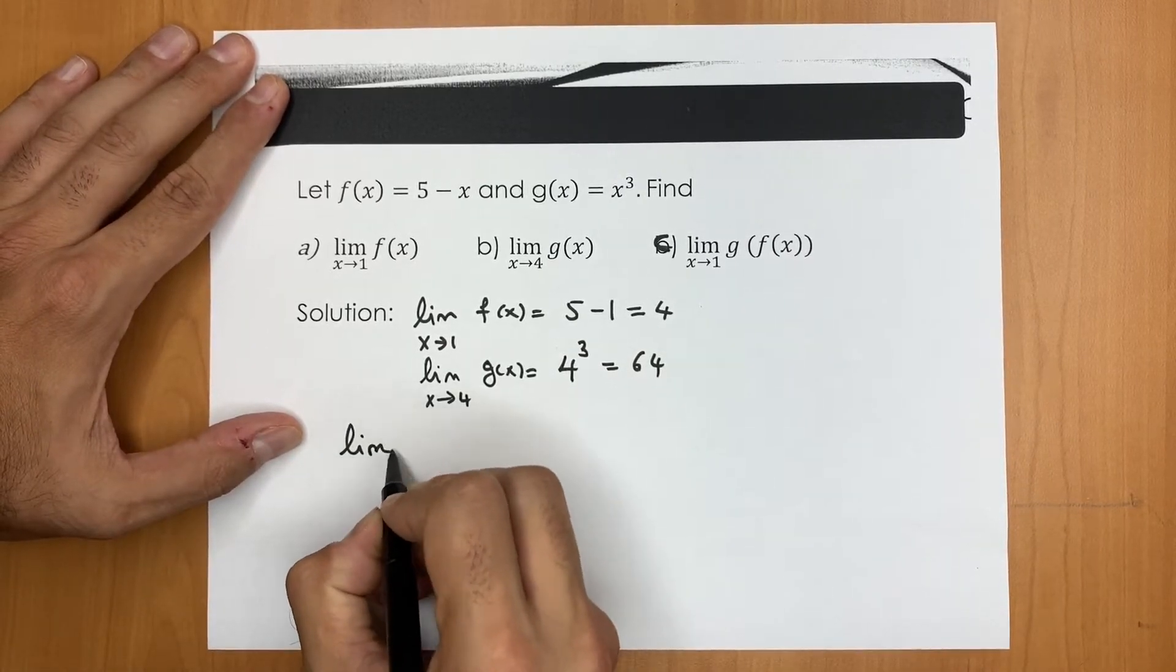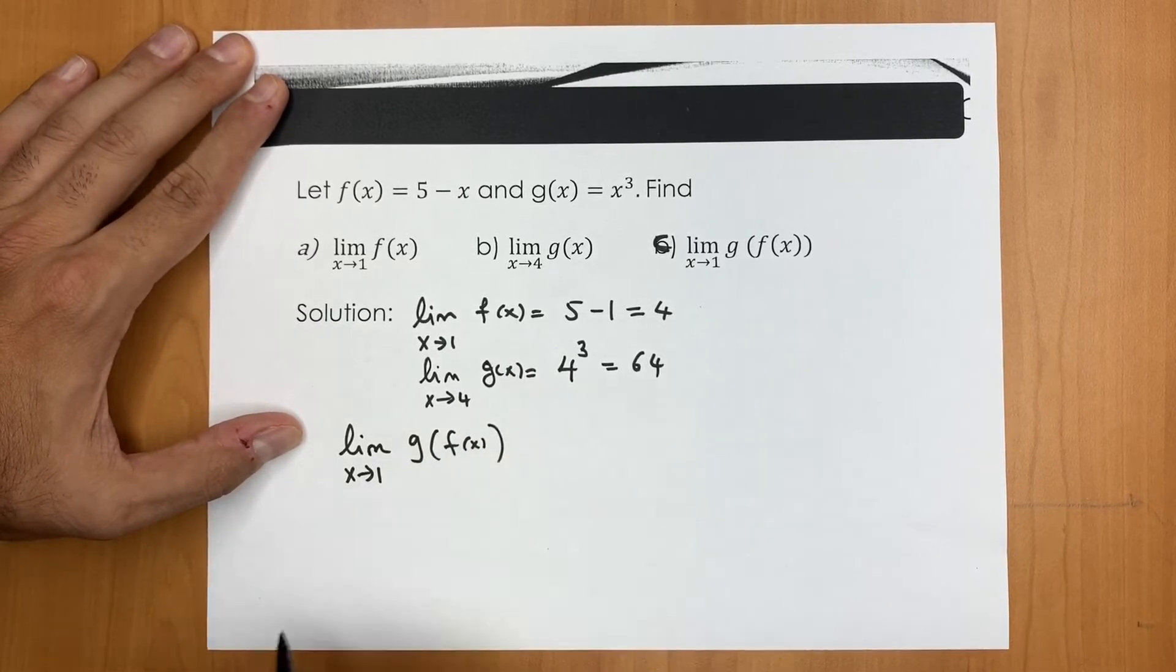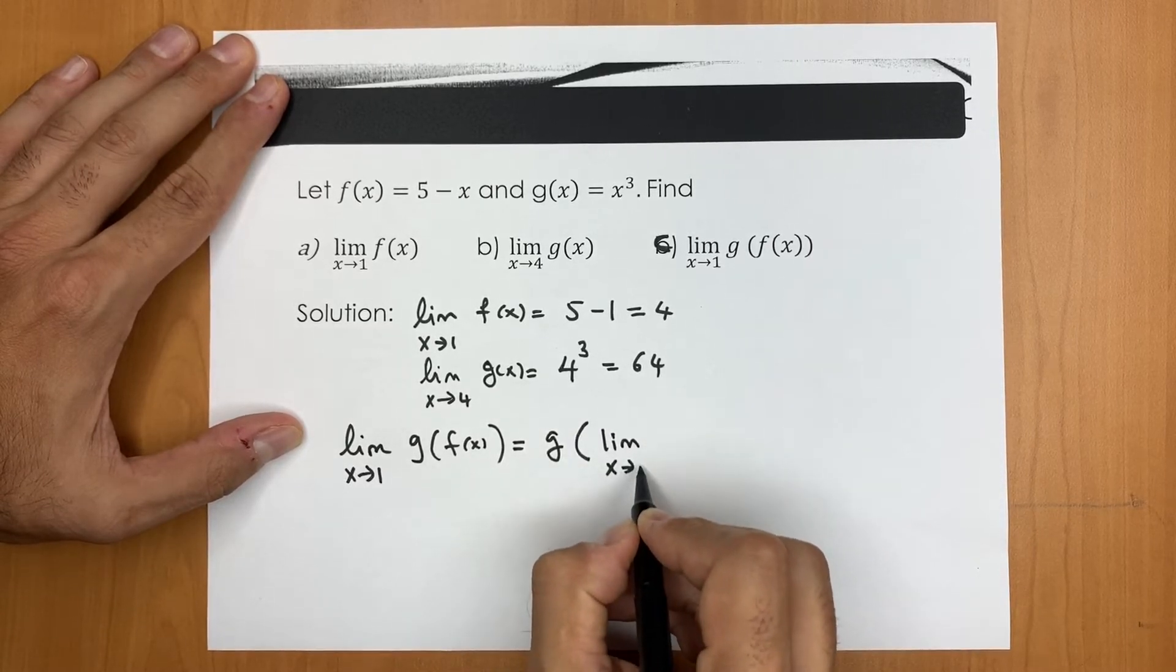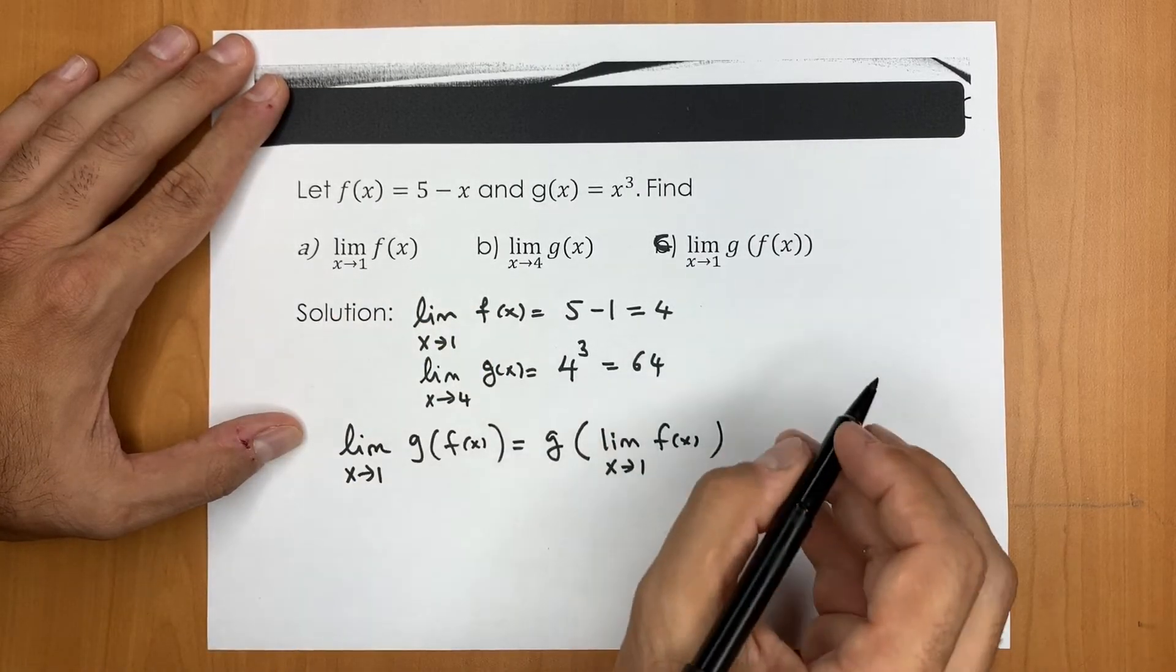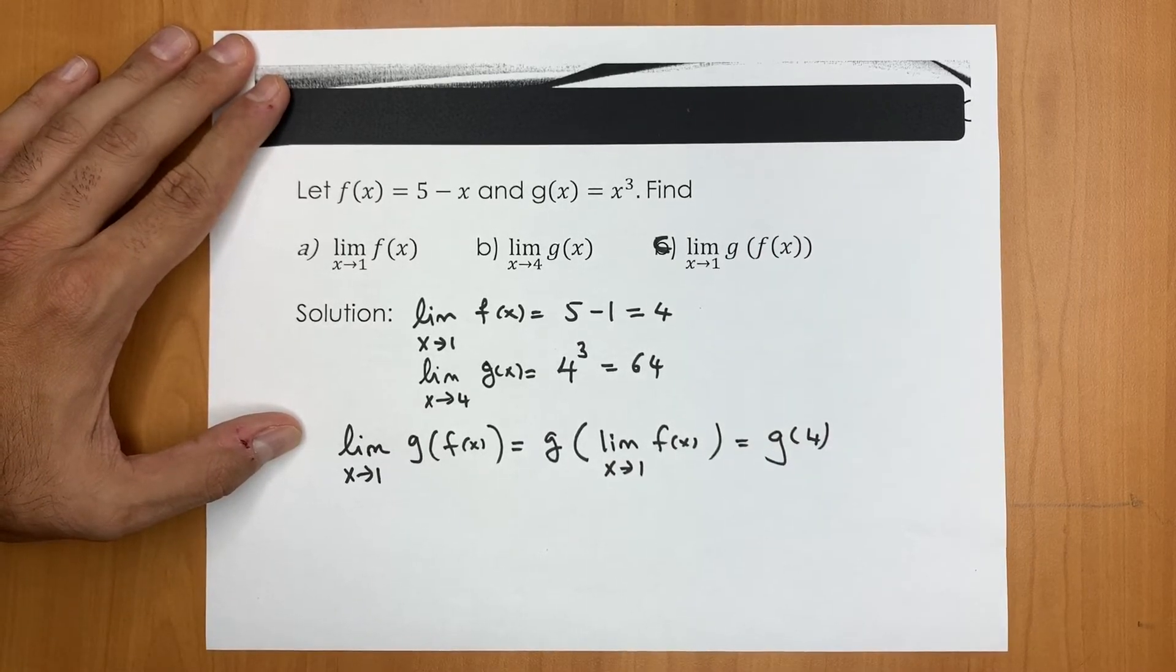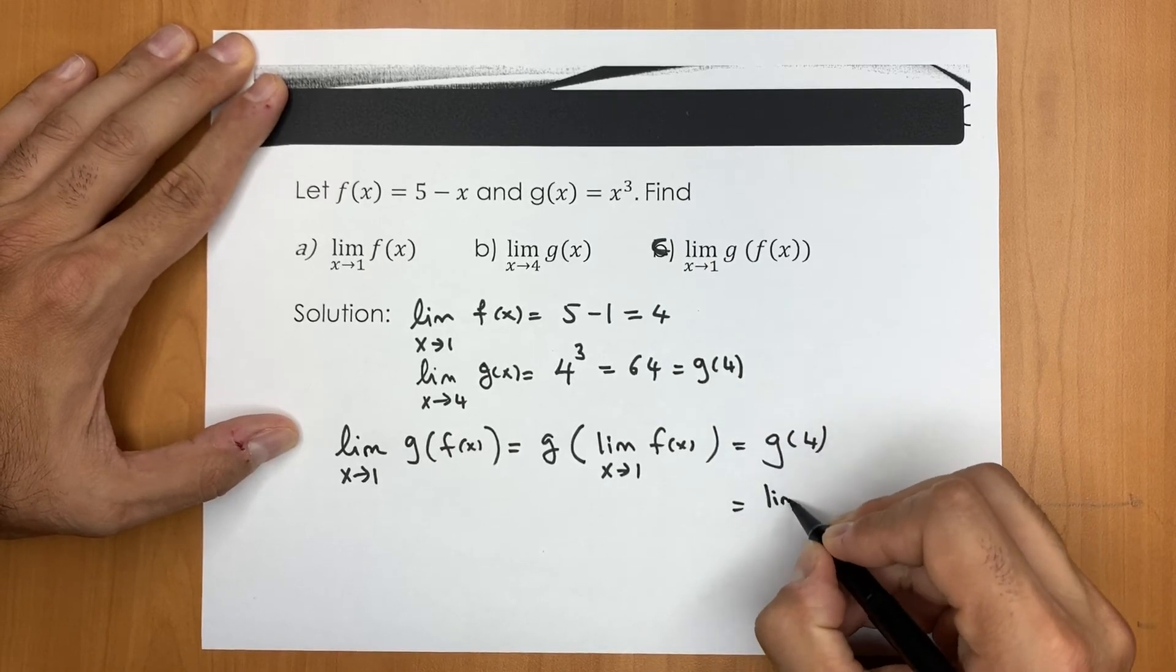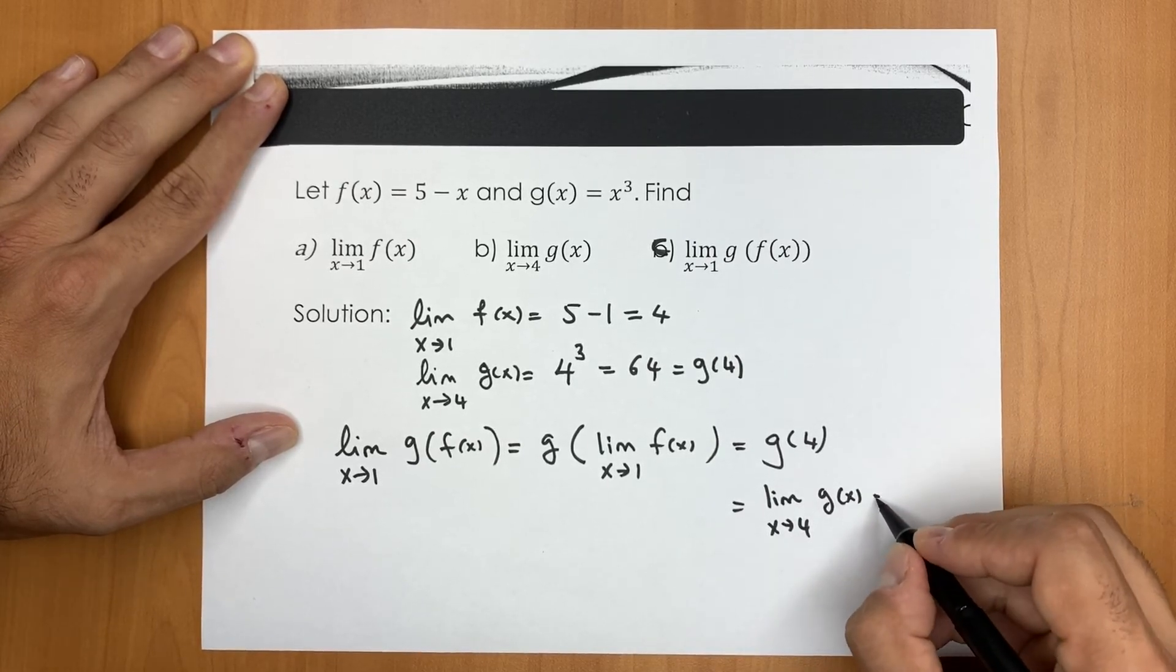So for that reason, the limit of g composed by f is equal to—I can pass the limit inside—g of the limit of f at x equals one. And we got this for part a. So this is g of four. And in fact, in part b, we just showed that g of four is the limit value. So this was the limit of g at four, and that was 64.